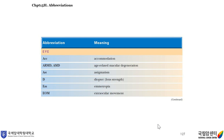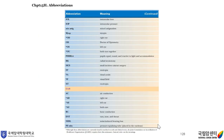Abbreviations. ACC: accommodation. ARMD or AMD: age-related macular degeneration. AST: astigmatism. D: diopter, lens strength. EM: emetropia, normal vision. EOM: extraocular movement. IOL: intraocular lens. IOP: intraocular pressure. Myopia. OD: right eye. OS: left eye. RK: radial keratotomy. ST: esotropia. VA: visual acuity. VF: visual field. EAR abbreviations — AD: right ear. AS: left ear. AU: both ears. BC: bone conduction. ENT: ear, nose, and throat. PE tube: pressure-equalizing tube.